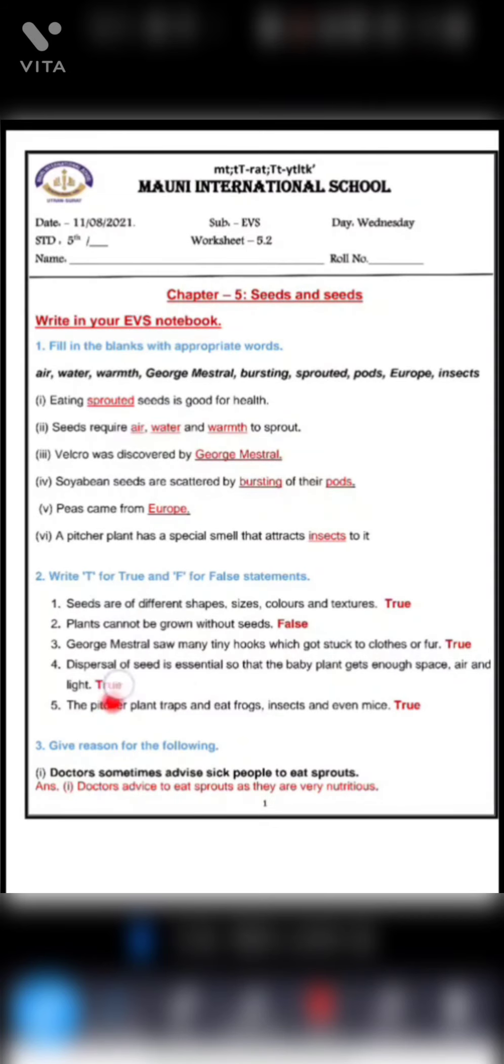Fourth one, dispersal of seeds is essential so that the baby plant gets enough space, air and light. So yes, this statement is also true. Seed dispersal is very important. So that the new plant, the baby plant gets enough space, air and light. If it grows under the parent plant, it will be in shade and won't get proper space, air and sunlight. And the growth of plant will be stopped or hindered. That's why dispersal of seed is very important.